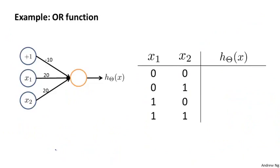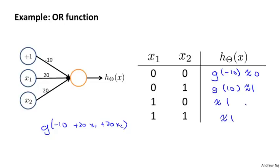This network shown here computes the OR function. Just to show you how I work that out, if you write out the hypothesis, you find that this computing g of minus 10 plus 20x1 plus 20x2. And so if you fill in these values, you find that g of minus 10 which is approximately 0, g of 10 which is approximately 1, and so on. And these are approximately 1 and approximately 1. And these numbers is essentially the logical OR function.